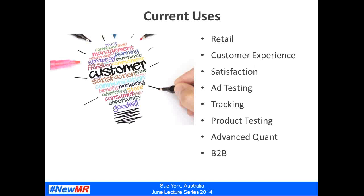Some of the current uses of mobile research include great examples coming out of the retail and customer experience space — satisfaction studies, ad testing, ad tracking and product testing. There will continue to be strong advances in the area of advanced quantitative studies and also some uses in B2B research.